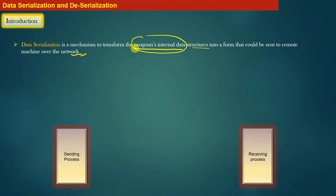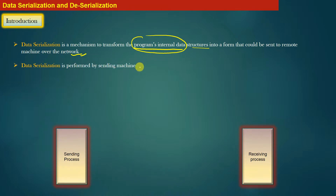You simply cannot send your program's internal data to a remote machine by simply copying the bytes of your data over the wire. You actually need to refine your data before sending it over the wire or over the network to a remote machine. So data serialization is performed by the sending machine.